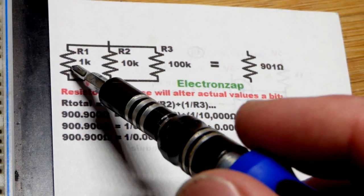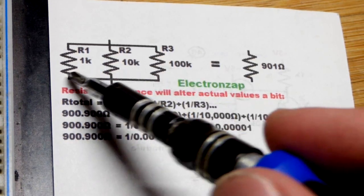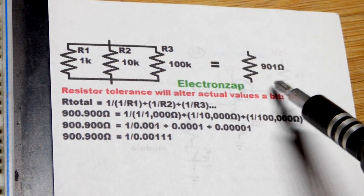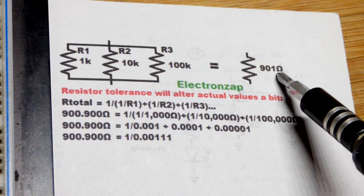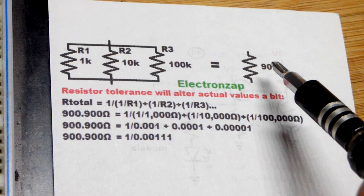We're going to have the equivalent if they were perfect in their values. Unfortunately, resistors are not. But if that was their exact values, we would have 900.9 ohms, which I rounded off to 901 ohms.